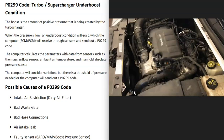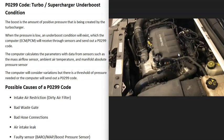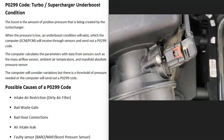Another possible cause is an air intake leak. All the air should be going in through the turbo into the throttle body, and if air is getting in around the engine somewhere, it can throw things off and cause issues. This could be something like a bad hose, a bad PCV valve, or a bad gasket.